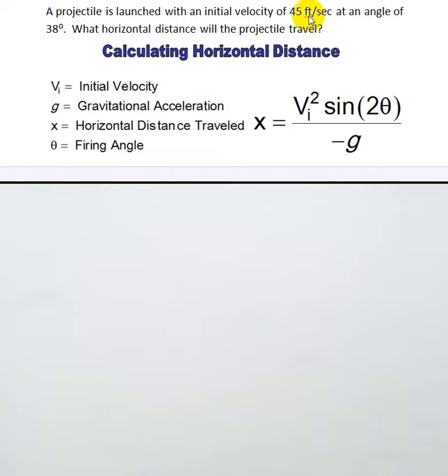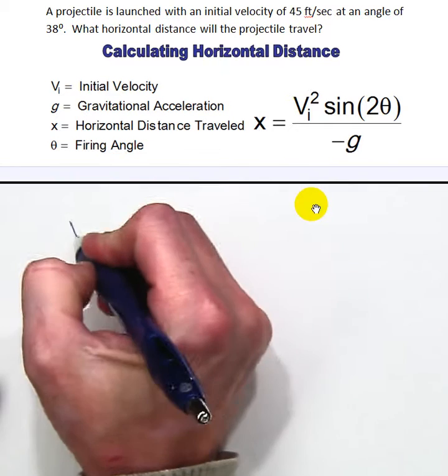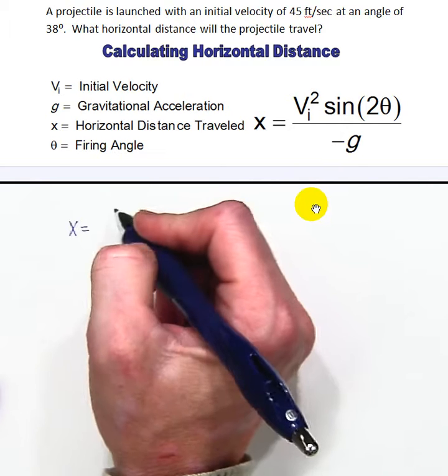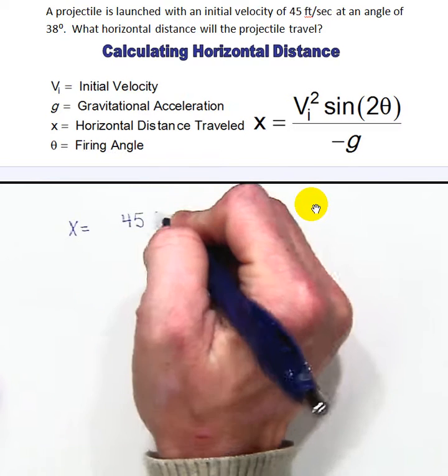So for the gravitational acceleration constant we're going to use negative 32. I'm going to start by putting in my equation. X equals - I'm going to fill in the variables that I know. My initial velocity was 45 feet per second, squared.